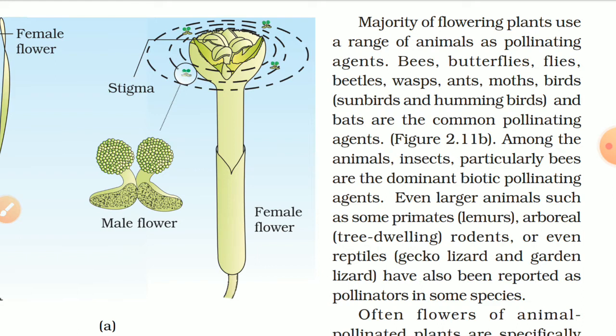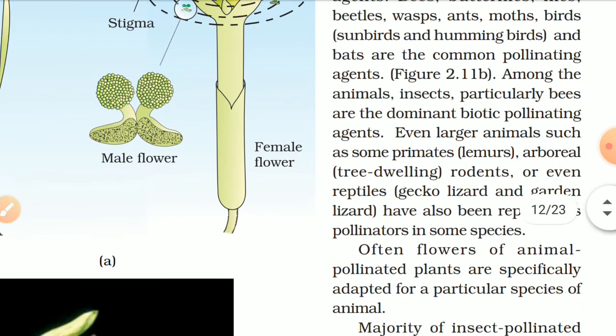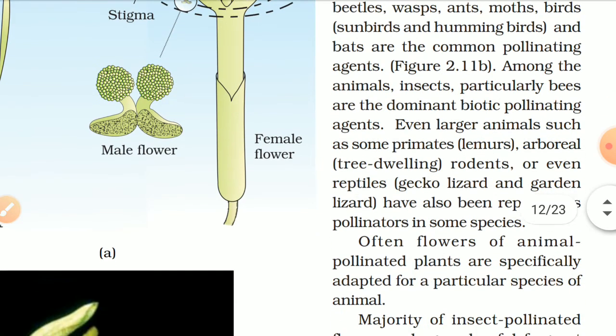Among animals, insects — particularly bees — are the dominant biotic pollinating agents. Even larger animals such as primates, lemurs, arboreal tree-dwelling rodents, or even reptiles like gecko-lizards and garden lizards have been reported as pollinators in some species.